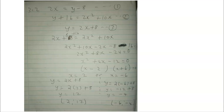The simultaneous equations question was worth 7 marks. I labelled the two equations 1 and 2, then made equation 3: y equals 2x plus 8. Substituting equation 3 wherever y appeared, I grouped like terms, simplified, and got a trinomial. Dividing everything by 2 made factorising easier. Equating to zero gave x equals 2 and x equals negative 6. Substituting back: when x is 2, y equals 12; when x is negative 6, y equals negative 4.